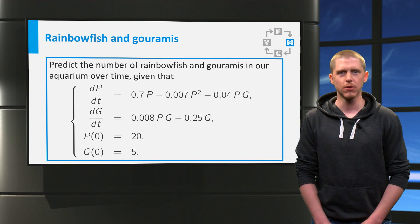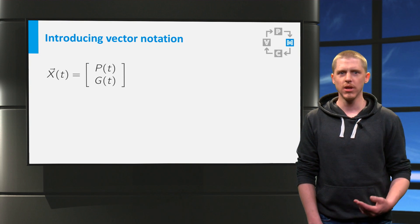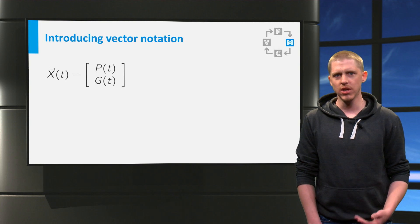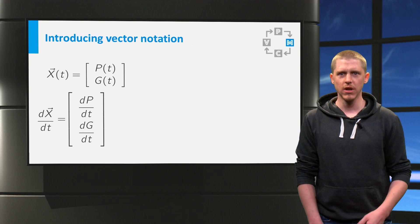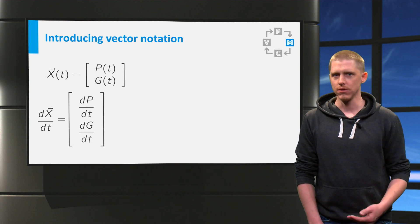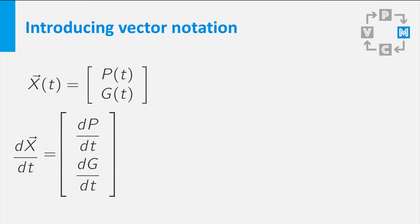So let us start with the differential equations. If you define the vector function x to be the vector containing the functions p and g, the derivative of this vector is defined as a vector with the derivatives of p and g. We know two equations for these two derivatives, the differential equations. So let us use these.